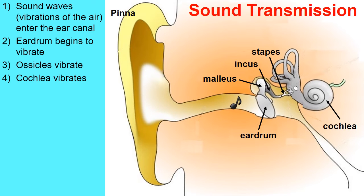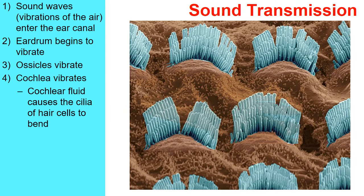That vibration is then passed along to the cochlea, the curly-shaped bone located more internally inside of our ear. Inside of the cochlea, it's not empty and hollow — there is fluid inside the cochlea, and here we have a picture of some of those hairs sticking up from hair cells.